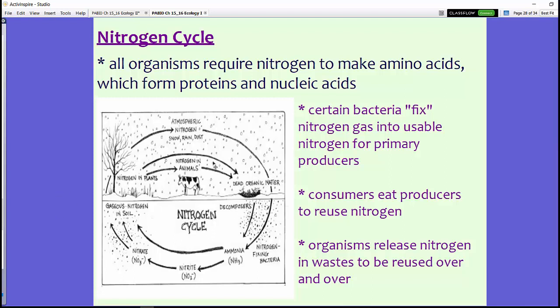Because we as consumers can't use that nitrogen gas, we rely on our primary producers to get that nitrogen. Once we eat plants or anything that eats plants, that nitrogen is now inside the consumer's body. When those consumers die or release waste, that nitrogen is released back into the soil, which is now usable for other plants or other producers to use.